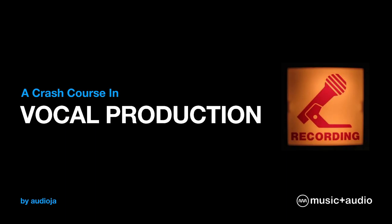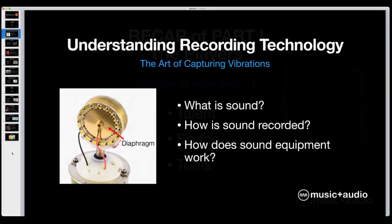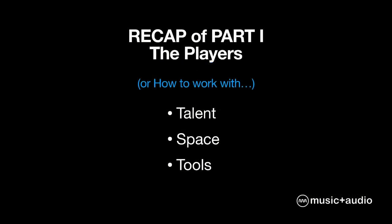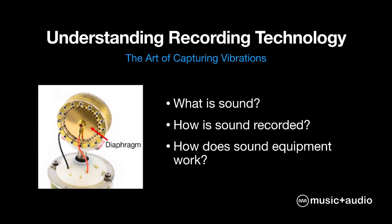If you were here last week, I'll do a little recap for those who weren't. We talked about three main elements: talent, space, and tools, and how you work with each one. We also talked about the general principles behind recording technology and the way sound works — really just vibrations in the air, like sticking your finger in a bowl of water creating ripples. Sound are ripples, vibrations that move through the air to our ears. Our ears have tiny hairs that detect vibration, which gets transformed into an electrical signal in our brains interpreted as sound.